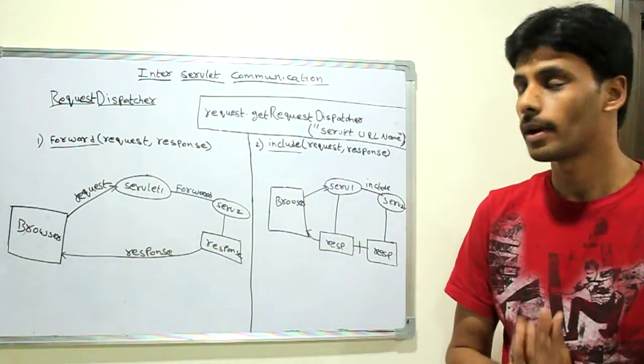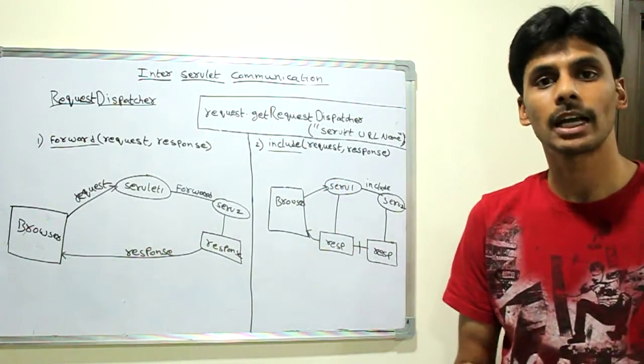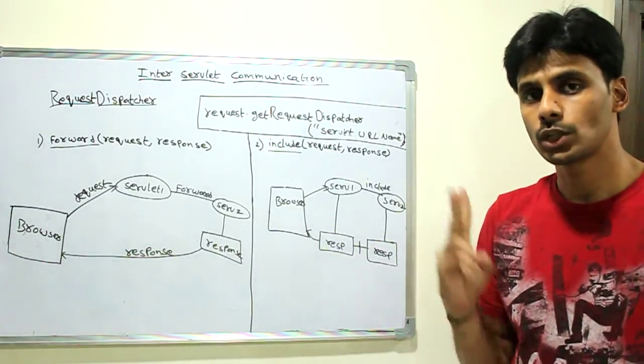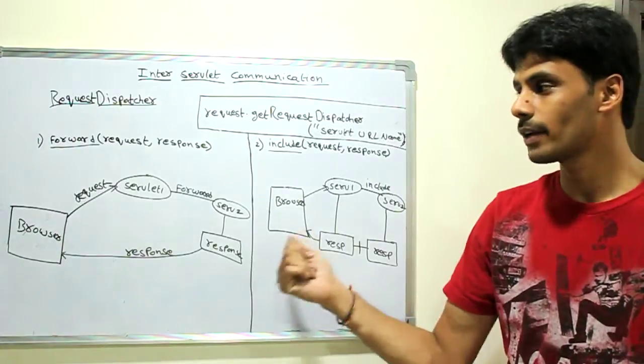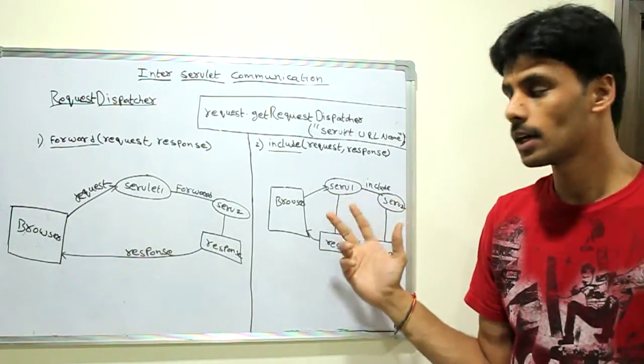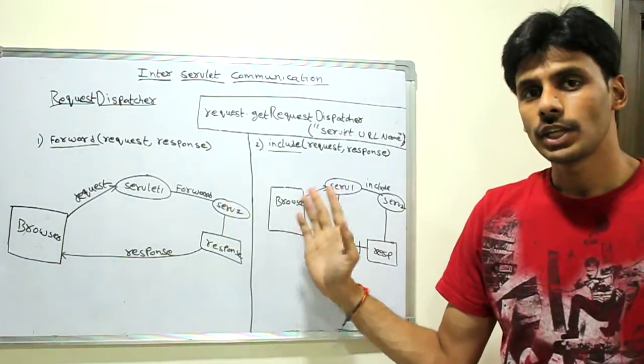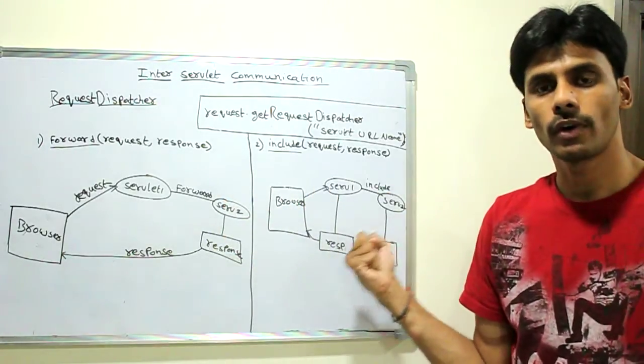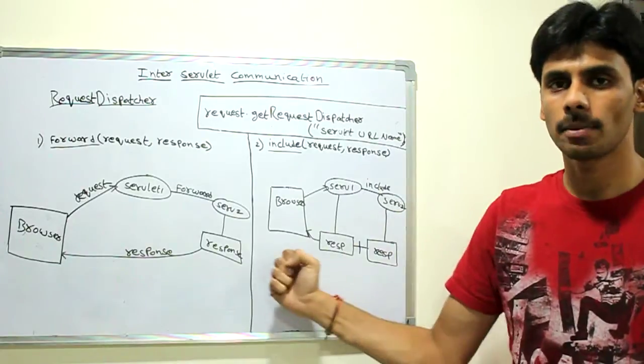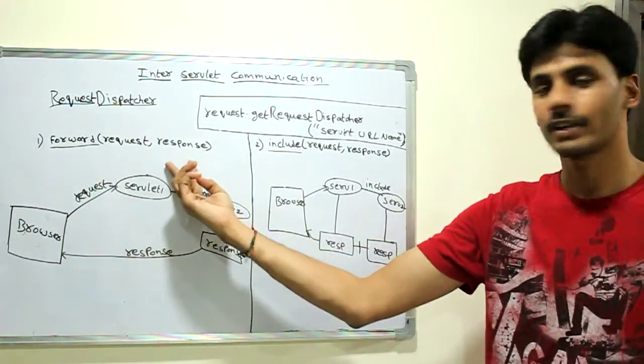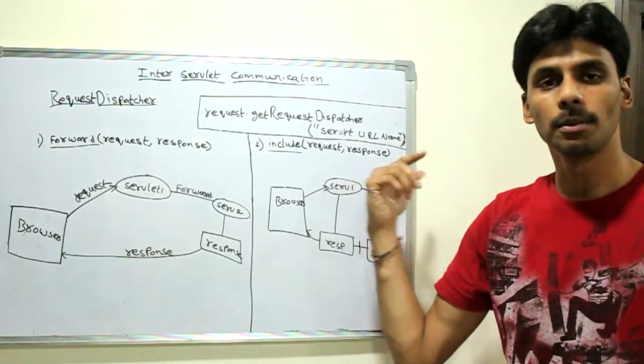To summarize, from this presentation, you have learned how to do inter-servlet communication using the request dispatcher interface, and it has two methods. The main difference between forward and include is that in forward, the last servlet in the chain sends the response back, and in include the response of all the servlets are merged and then sent back to the browser. The similarity between these two is they both take request and response as the input parameters.